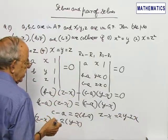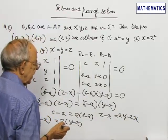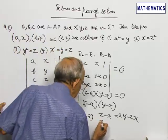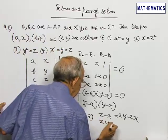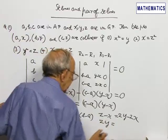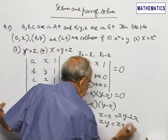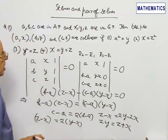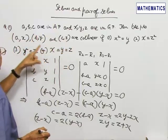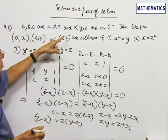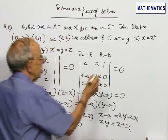Transposing the negative terms to the left hand side, I will get 4Y is equal to Z plus X. Another condition given is X, Y, Z are in GP.